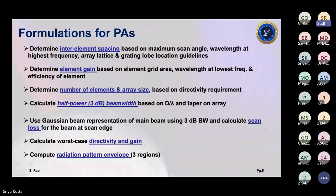You choose the number of elements and array size based on directivity requirements, since you already have the element gain. Then you calculate half-power beamwidth based on D/λ and the illumination taper needed on the array. The taper on the array is dictated by sidelobe requirements — most cases you want uniform illumination taper, but in some cases, such as radars and satellites on uplink, you need to reduce sidelobes. We provide an efficient parabolic taper that maximizes efficiency for a given taper compared to other taper types.